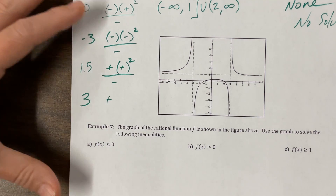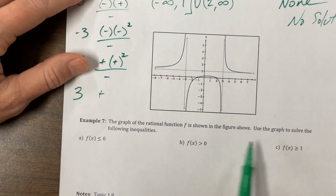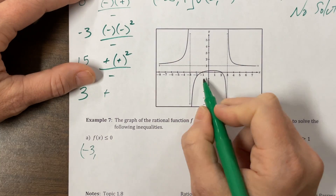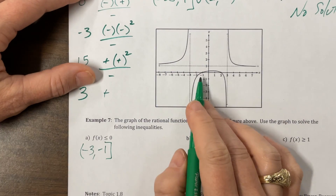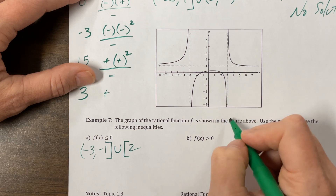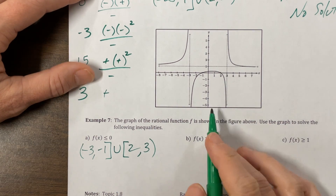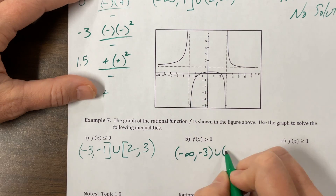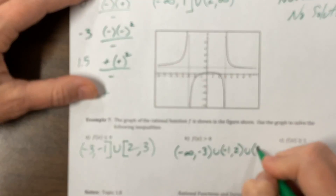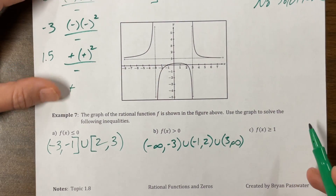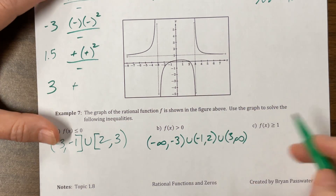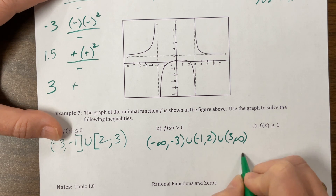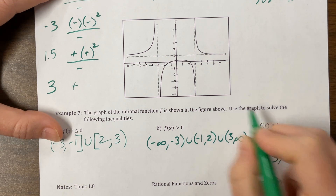Now they gave us a graph — this is his last example on this section. Use the graph to answer. Where am I less than or equal to zero? From negative three to what looks like negative one — I can equal zero there — and then at two I'm equal to zero again, and I go to the asymptote at three. Where am I greater than zero? From negative infinity to the asymptote, pick it up again between negative one and two — I can't equal those endpoints — and then on the other side of my asymptote, three to infinity. And where am I greater than one? Since one is the asymptote, I'll never actually equal one, so the answer is the same: negative infinity to negative three, then three to infinity.